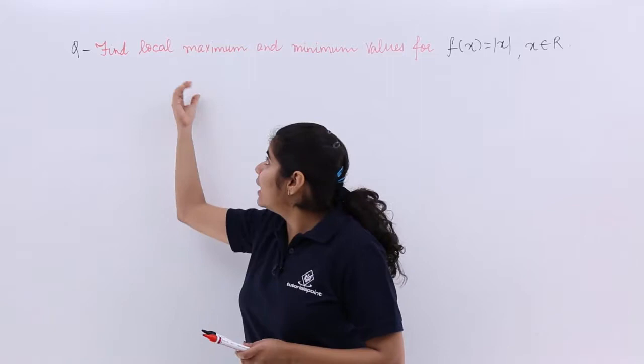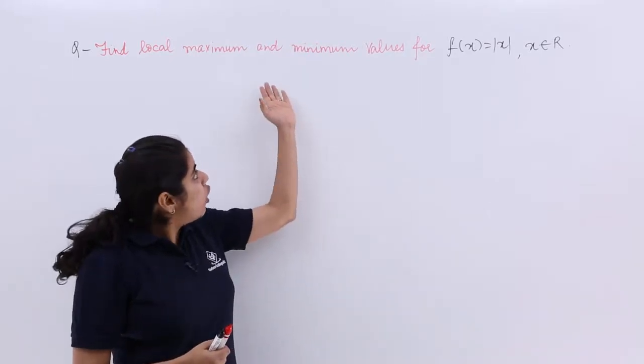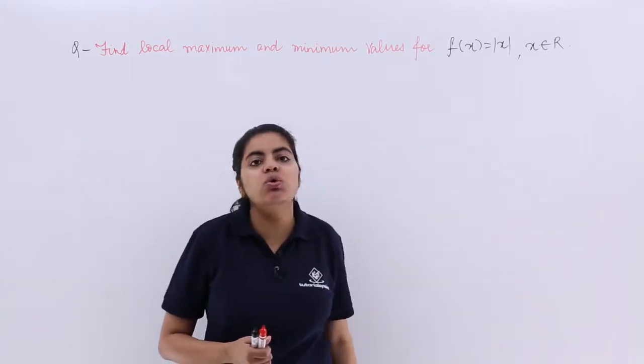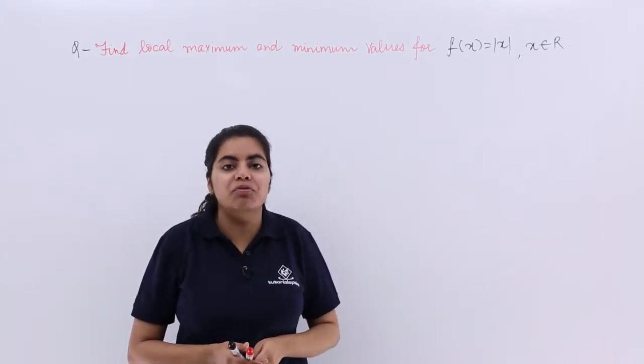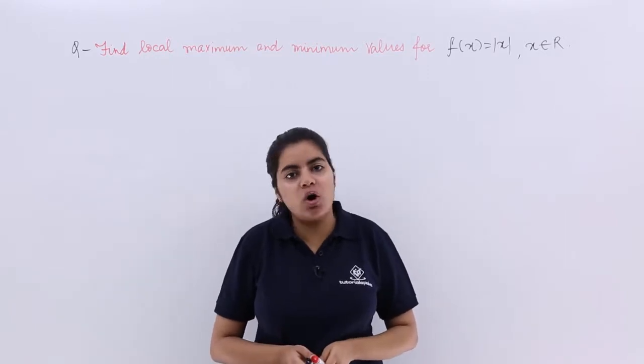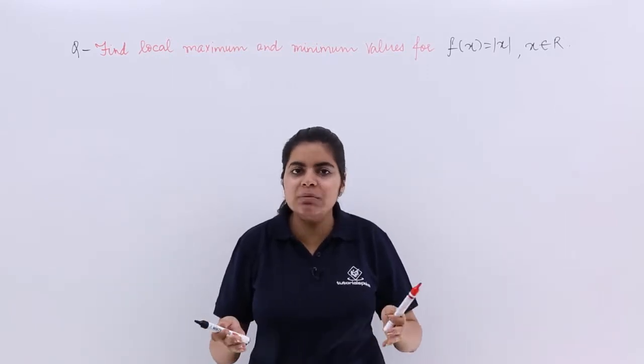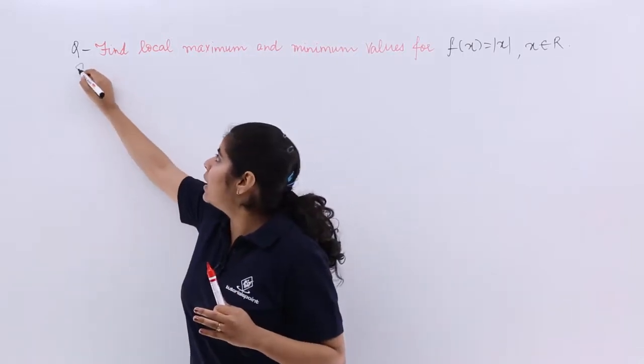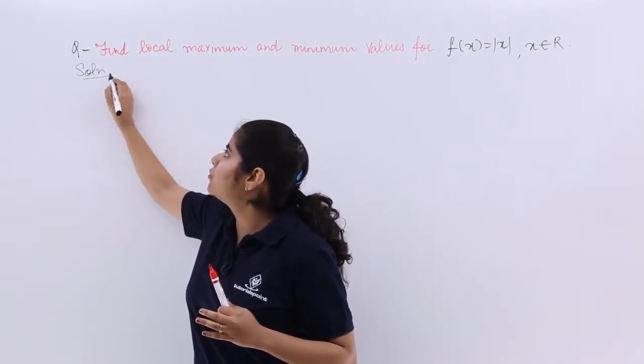The question is: find local maximum and local minimum values for f(x) = |x|, where x belongs to all real numbers. Now, had it been by graph, it would be very easy for us, but we still need to understand how to do it with the help of first derivative test.